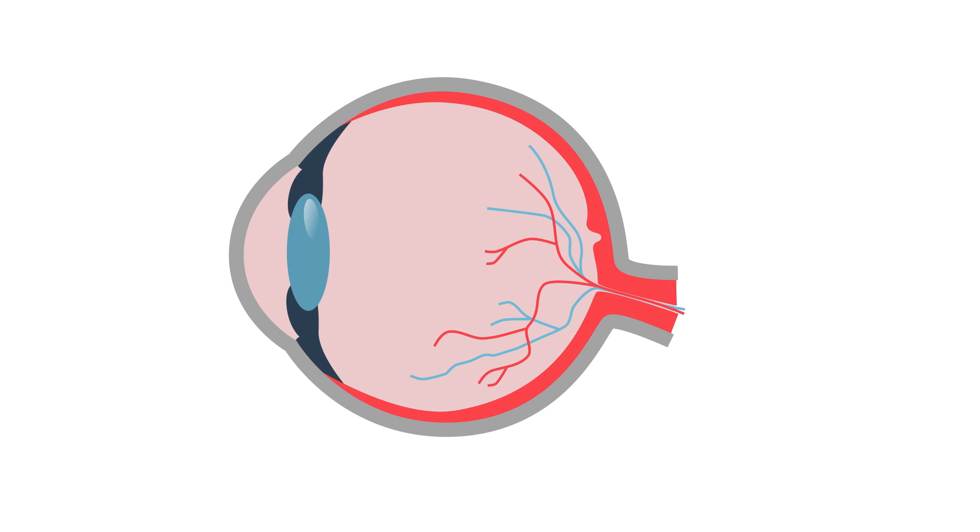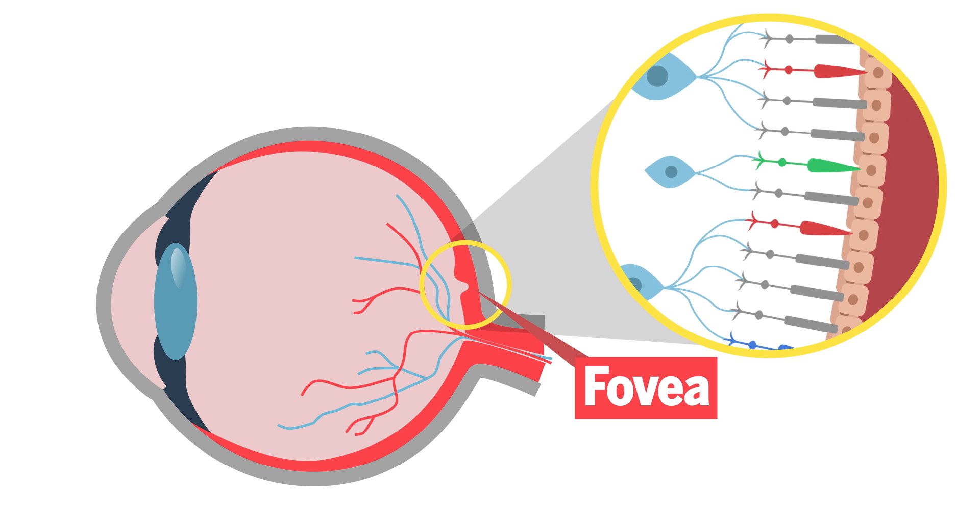Our eyes work the same way, thanks to a region called the fovea, which is rich in light receptors.